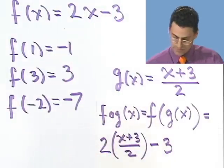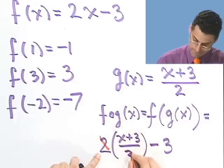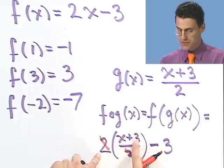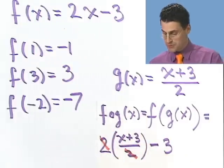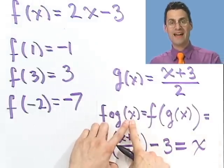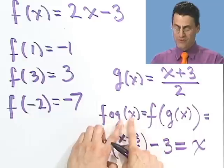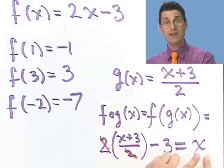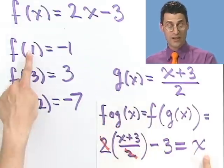So all I'm doing is evaluating f at g. That means wherever I see an x, I'm going to insert all of g right in there, and I get this. Well, notice the 2s cancel. So I just have x plus 3 minus 3. x plus 3 minus 3 equals, look, x.